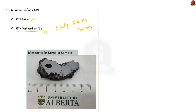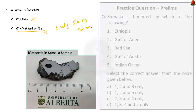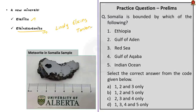In this discussion, we saw the difference between meteoroids, meteors, and meteorites. We also saw about the new minerals discovered in the meteorite found in Somalia. With this, let us conclude this discussion and move on to the next news article.